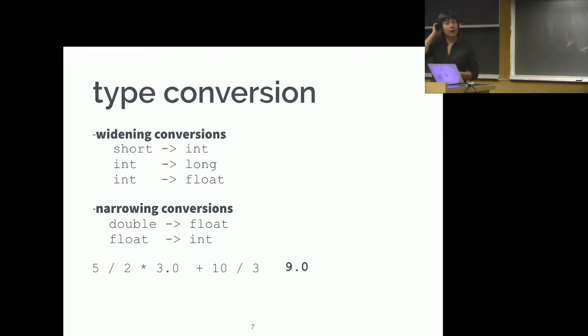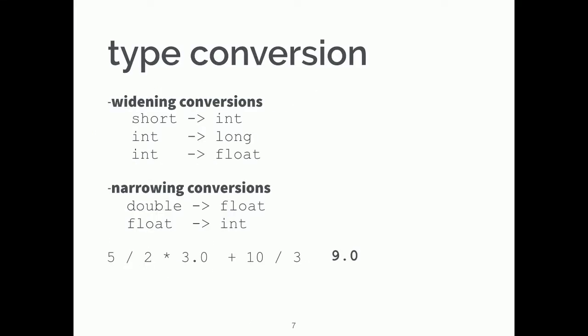So we work from left. If we look at this equation, the very first operation is 5 divided by 2 — and since both are ints, the result is 2. Then 2 times 3.0 gives 6.0. Then we divide 10 by 3, which gives 3. And then 6.0 plus 3 gives us 9.0.